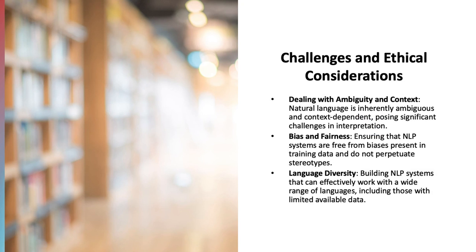One of the major challenges in NLP is dealing with the inherent ambiguity and context dependency of natural language. Human language is complex and nuanced, often requiring an understanding of context, tone, and cultural nuances to accurately interpret meaning. For NLP systems, deciphering ambiguous phrases, understanding idiomatic expressions, and recognizing the varied meanings that words can have in different contexts pose significant challenges. Ensuring accurate interpretation requires sophisticated algorithms capable of considering a wide range of linguistic and situational factors.